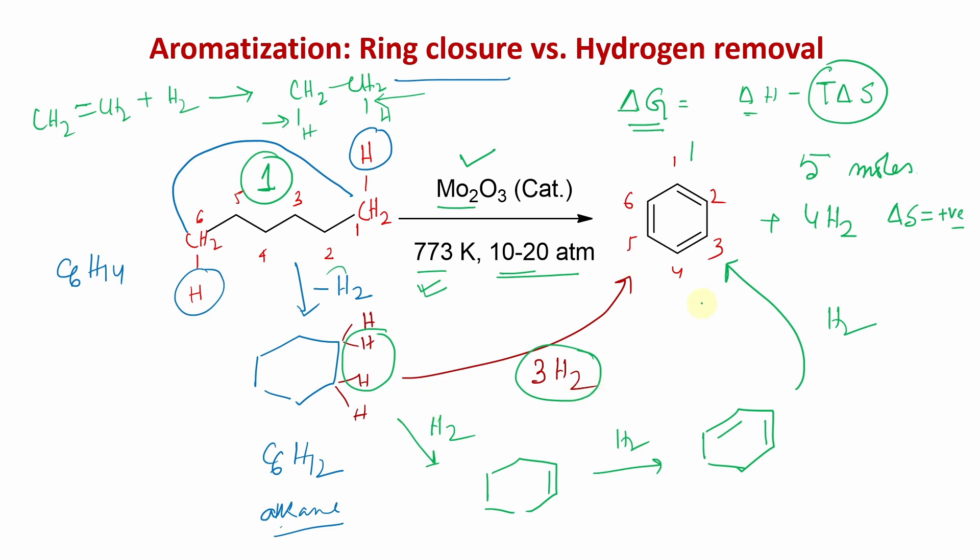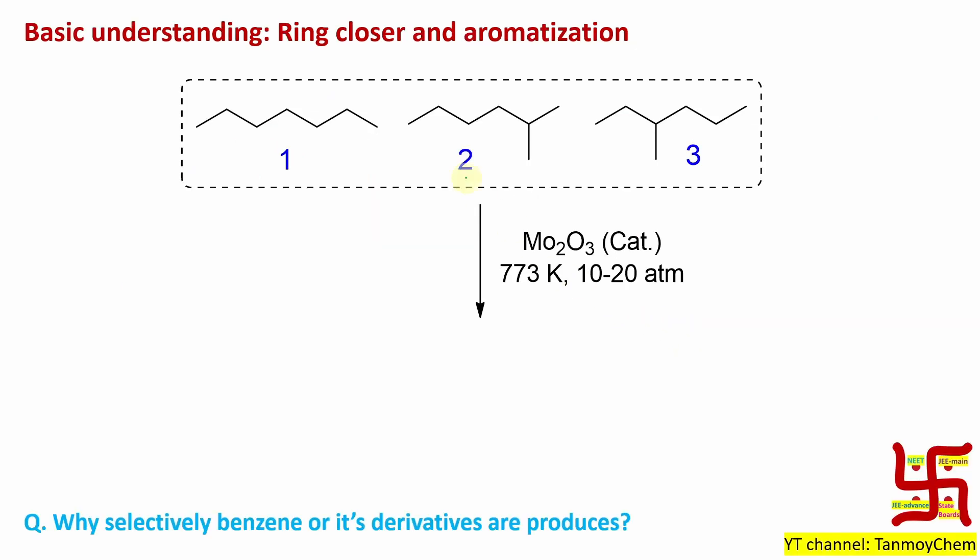The final product is benzene, which is aromatic, stabilized because of Huckel rules. Aromaticity means stability because aromaticity is associated with huge amount of delocalization or resonance.